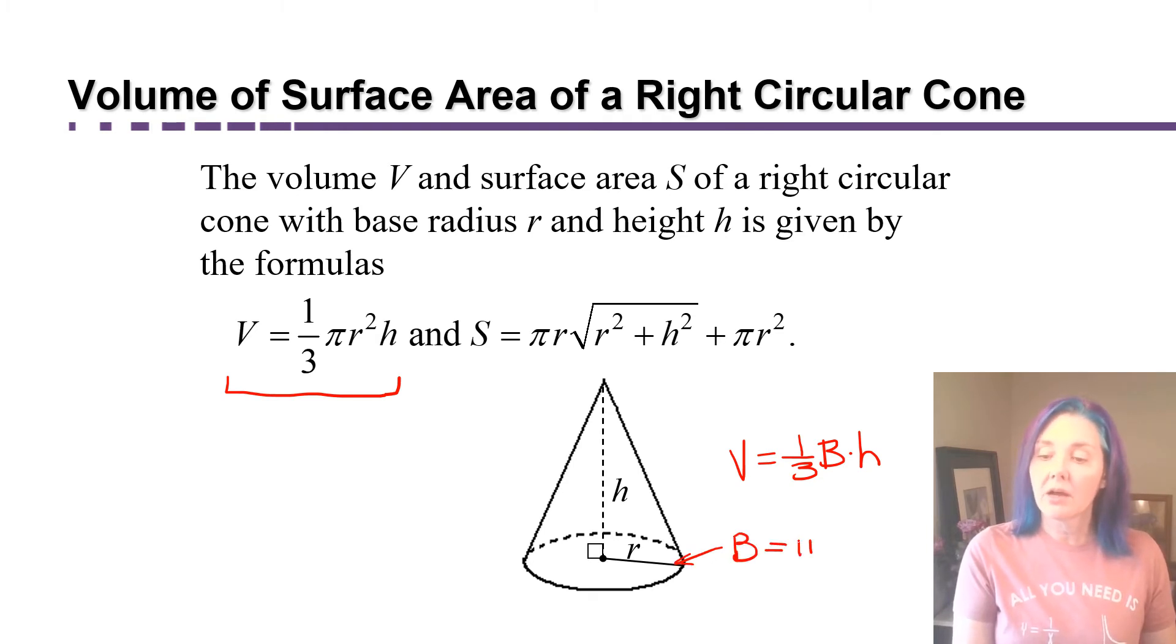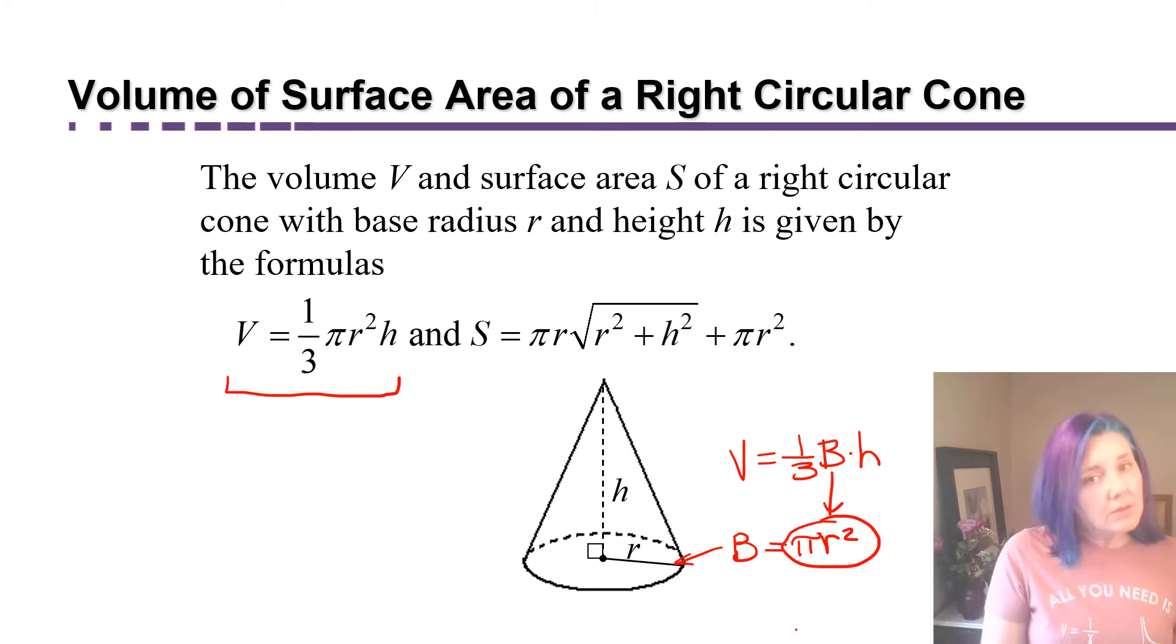is the area of the circle of radius R, which we know the area of a circle is given to us as pi r squared. So all they've done is replace the B with what it's equal to, pi r squared. So the volume of a right circular cone, as it's called, is one-third pi r squared h.